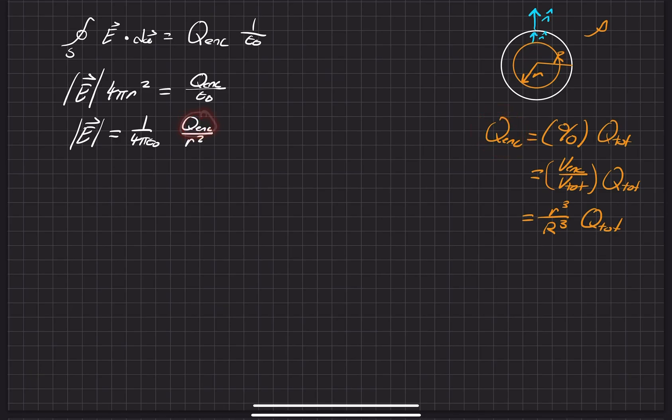The whole point is to try to go from something that we don't necessarily know into something that we do know. We do know the radius of the big sphere, and we do know the charge density of it. So we can go ahead and use this and throw it into our Q enclosed.